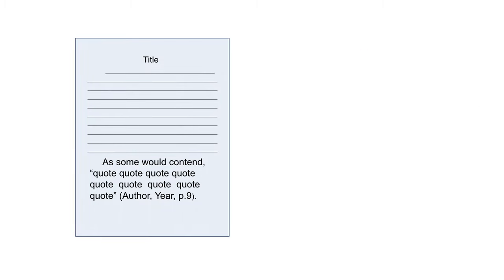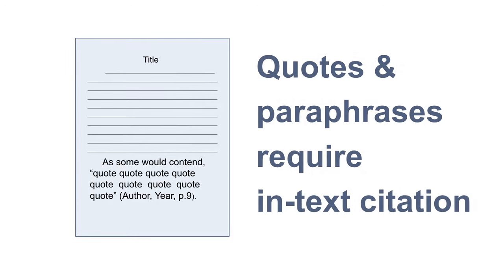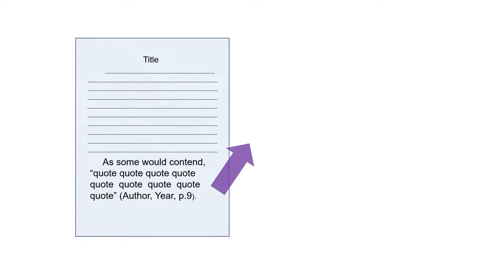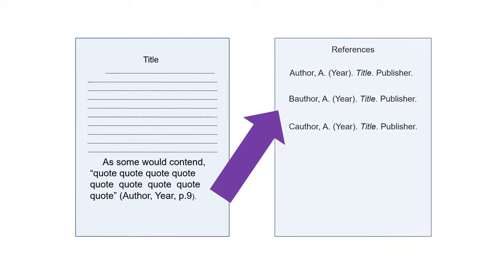Anytime that you paraphrase or quote someone else's words or ideas within the body of your paper, you must give credit to the original author with an in-text citation. An in-text citation is a short citation that refers the reader to the full reference at the end of a paper.